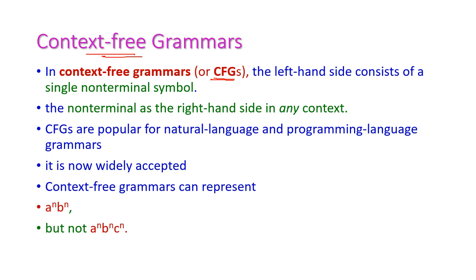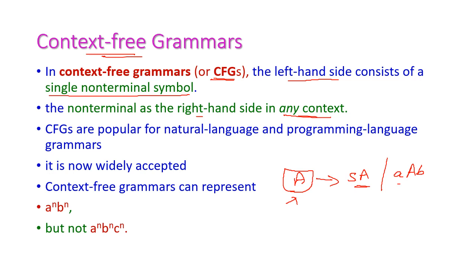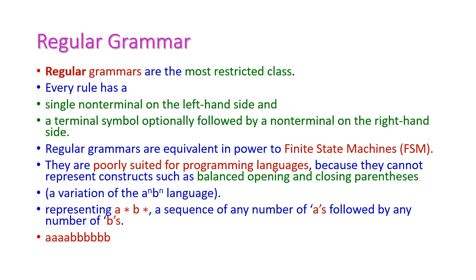Context free grammar, otherwise called as CFG. Here the left hand side consists of a single non-terminal and the right hand side can be any context. For example, a rule such as S → A R A B. The left hand side is only a single non-terminal and the right hand side any combination may come. This is called context free grammar. It is very popular for natural language processing as well as programming language grammar — that is formal language grammar — and it is widely accepted. Context free grammar can represent a-power-n, b-power-n, but not a-power-n, b-power-n, c-power-n.